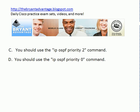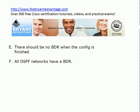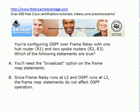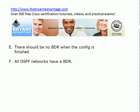Should you use the IP OSPF priority 2 command or the IP OSPF priority 0 command in this configuration — or neither? In this exam, as with exams on the webinar site, I don't tell you how many choices are true. Finally, should there be no BDR when the config is finished, or do all OSPF networks have a BDR? Take another look at those statements, and in a moment I'll bring up the router pod with R1, R2, and R3 — already pre-configured — and we'll go through the answers.